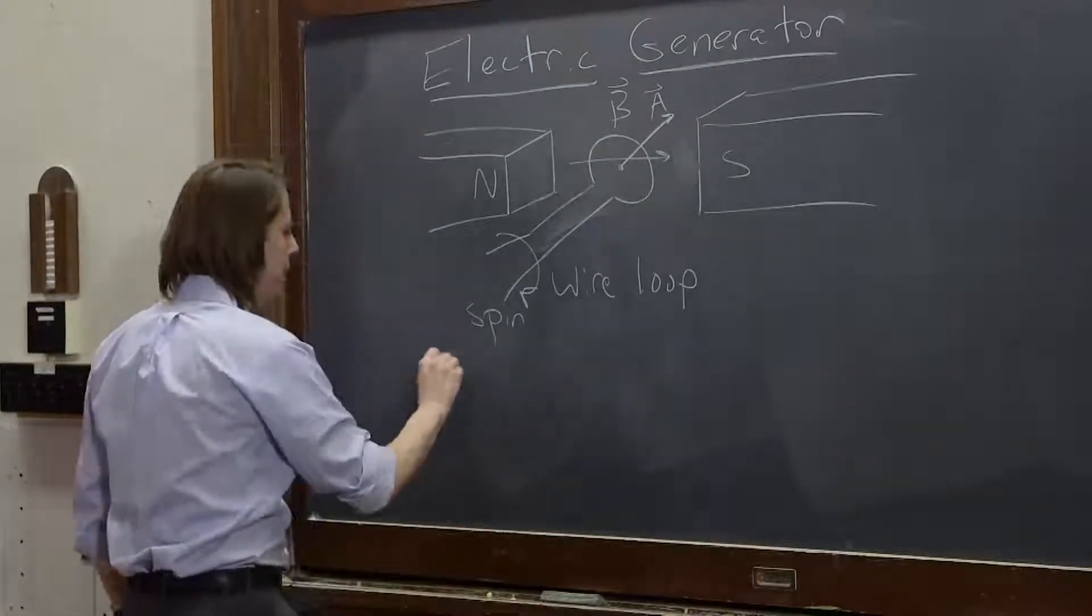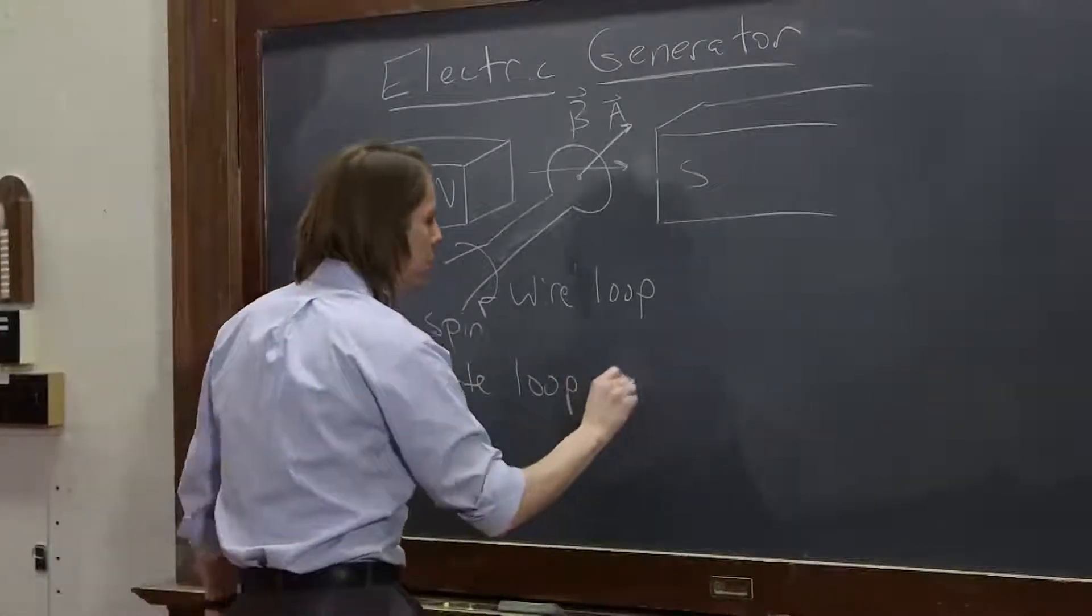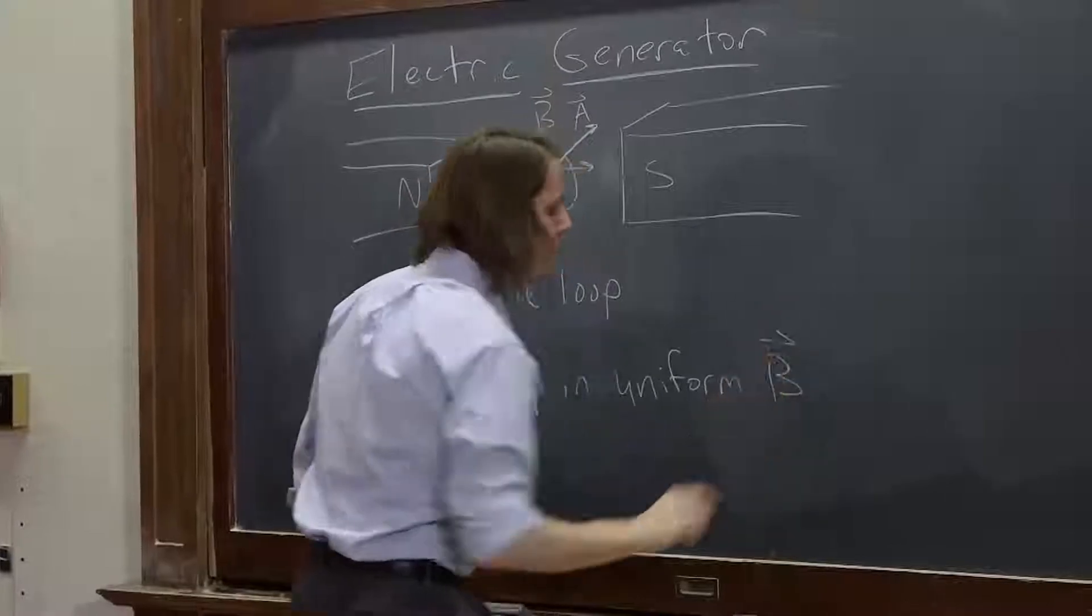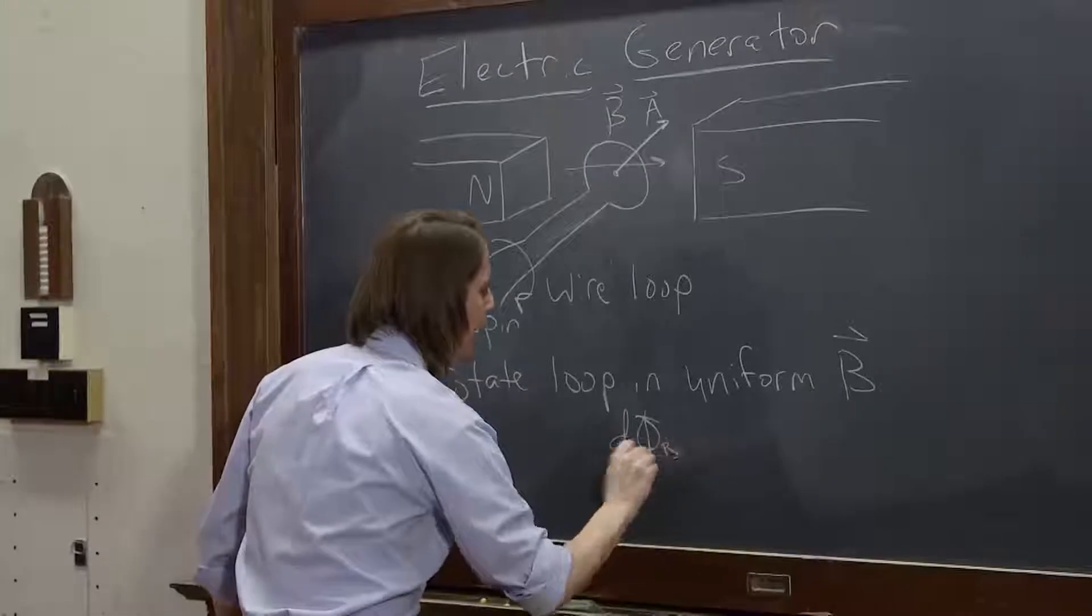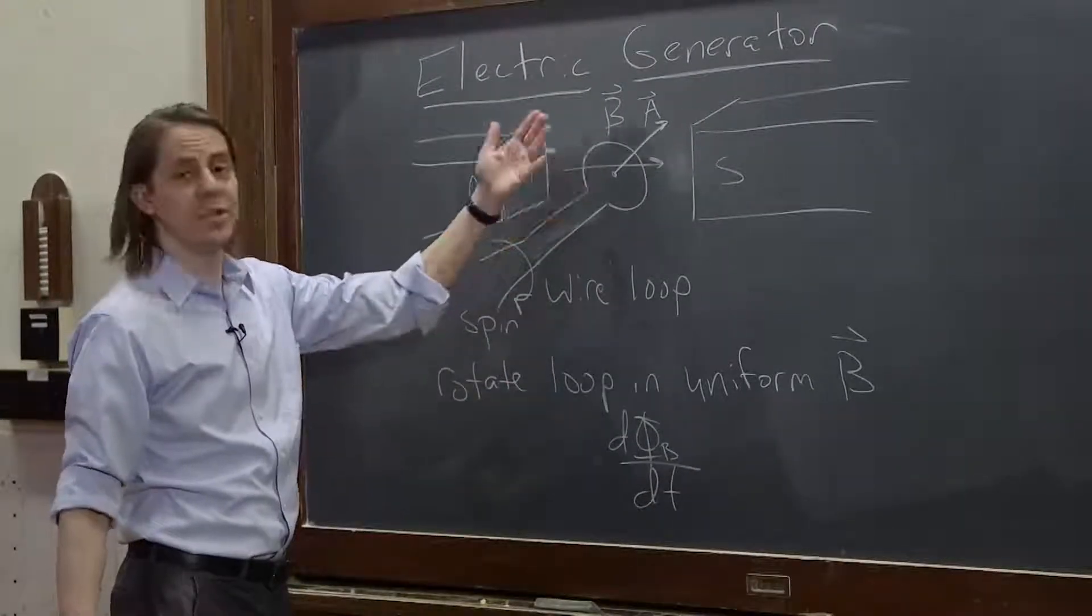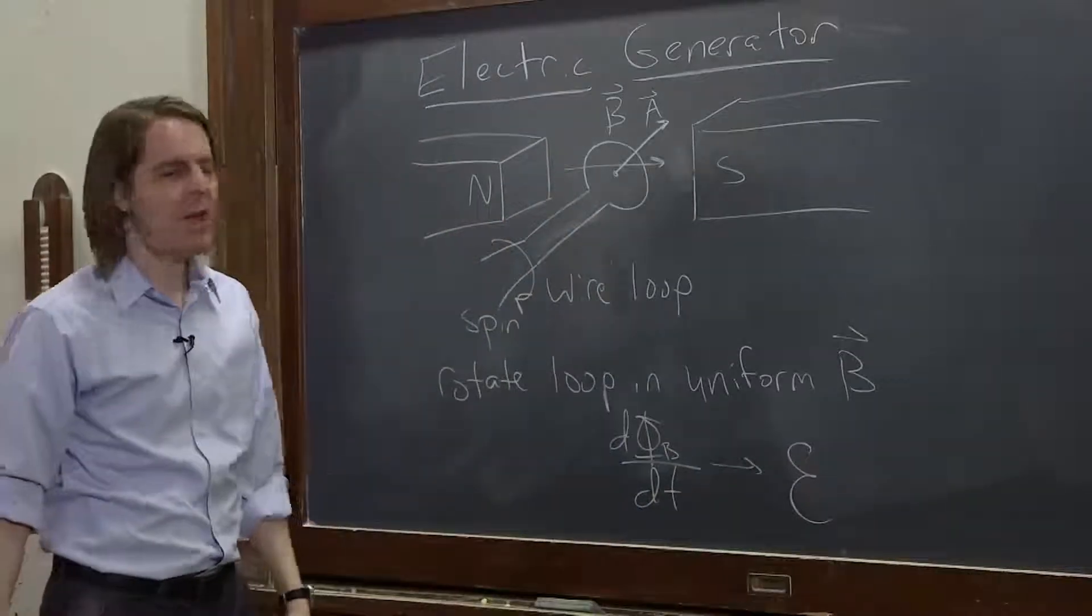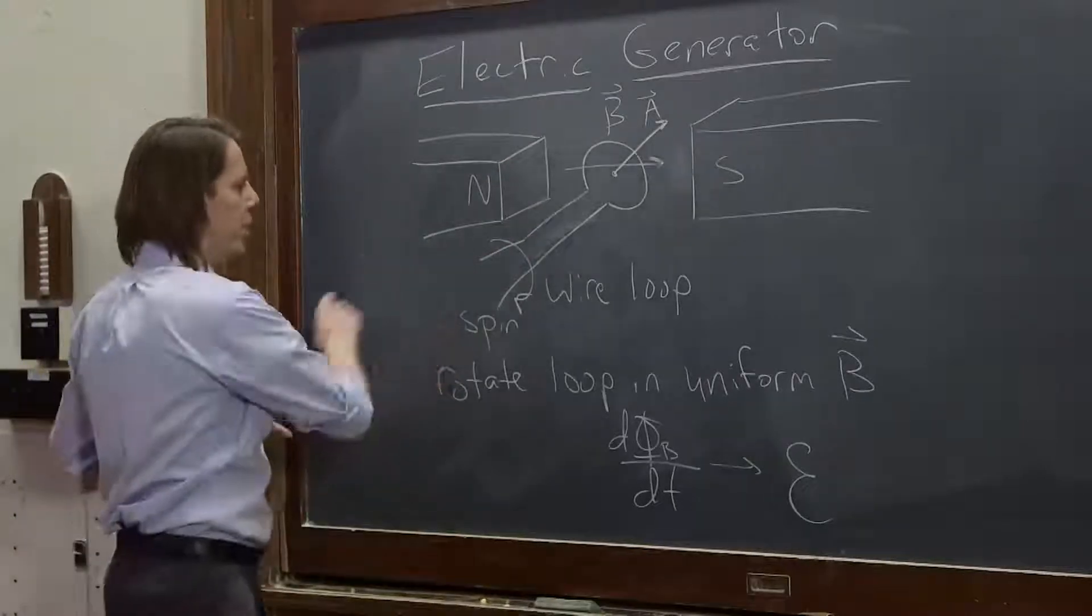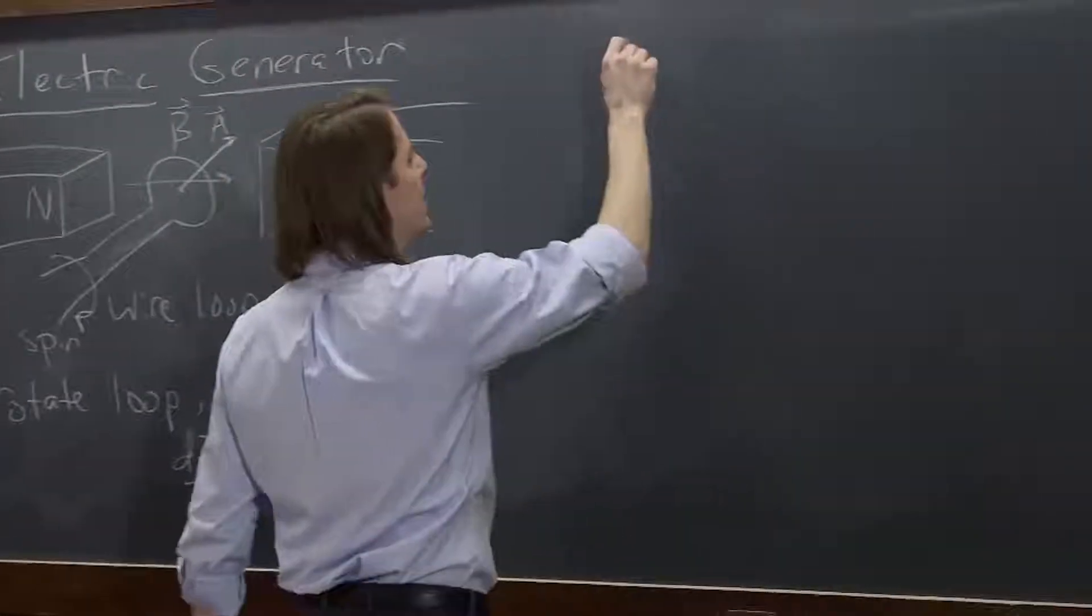So if we rotate the loop in a uniform B, then we know we will get a d phi B dt. The magnetic flux through the loop will change in time, so therefore we'll get an EMF. So this is how you can induce an EMF in a circuit by rotating a wire loop. So let's look at what we would get.